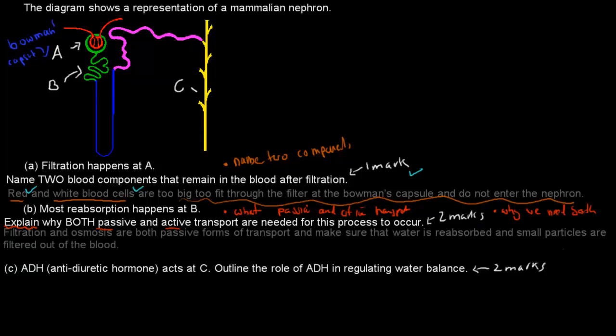What I wrote is filtration and osmosis are both passive forms of transport. I mentioned what our passive forms of transport are for this part, which occurs at A and B: filtration and osmosis. This makes sure that water is reabsorbed, so osmosis makes sure that water is reabsorbed. And filtration makes sure that small particles are filtered out of the blood and actually enter Bowman's capsule. And then from there they go into the distal and proximal tubule.